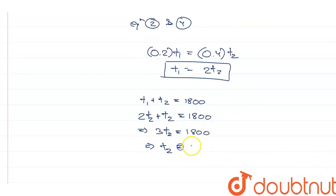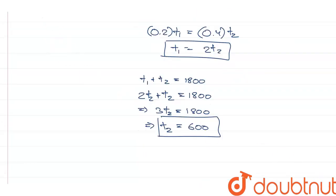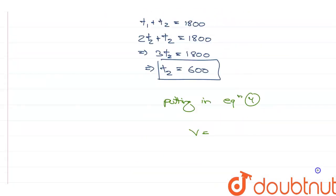So, T2 is equal to 600 seconds. Now, if T2 is equal to 600 seconds, I can put this value into equation number 4 and I get V is equal to 0.4 into T2. So, 0.4 into 600 which is equal to 240 meter per second.